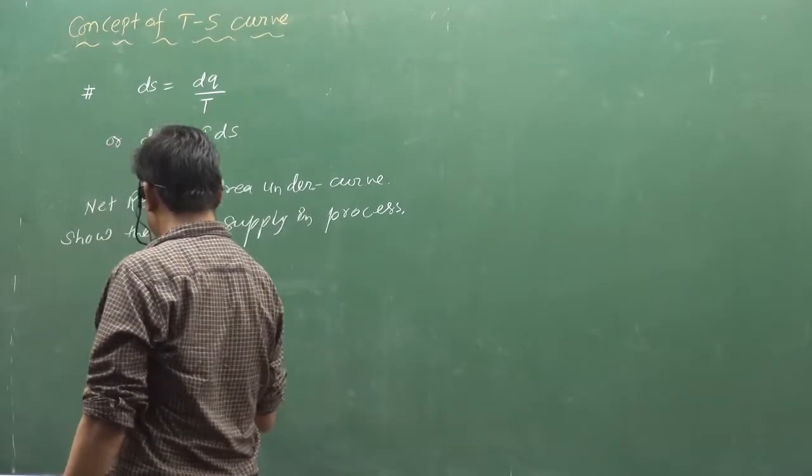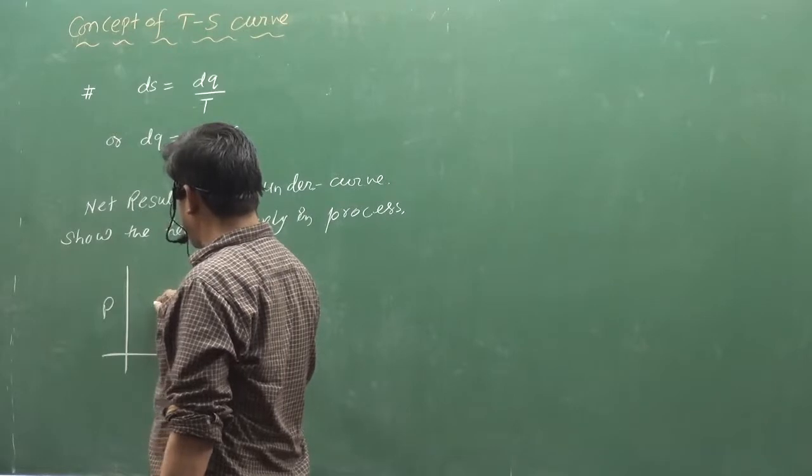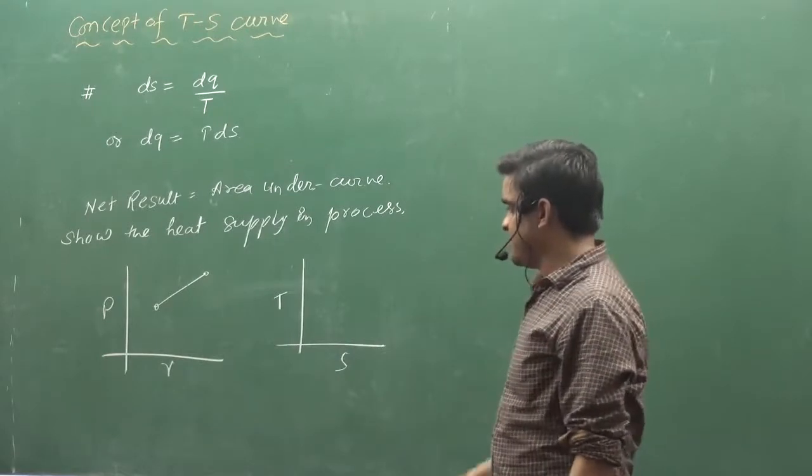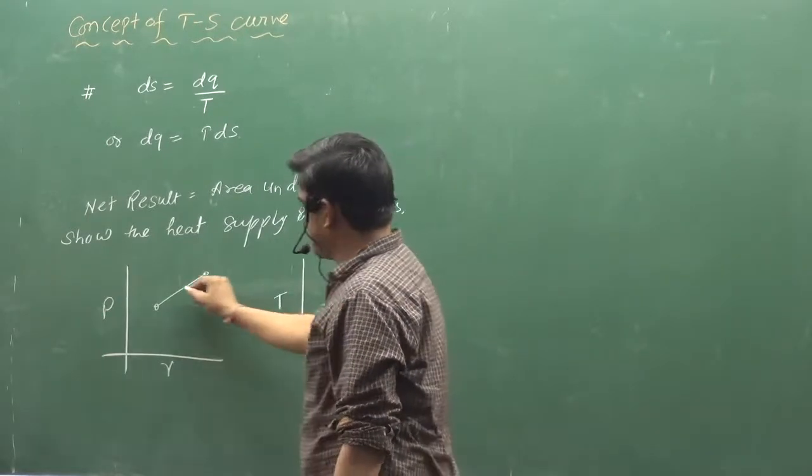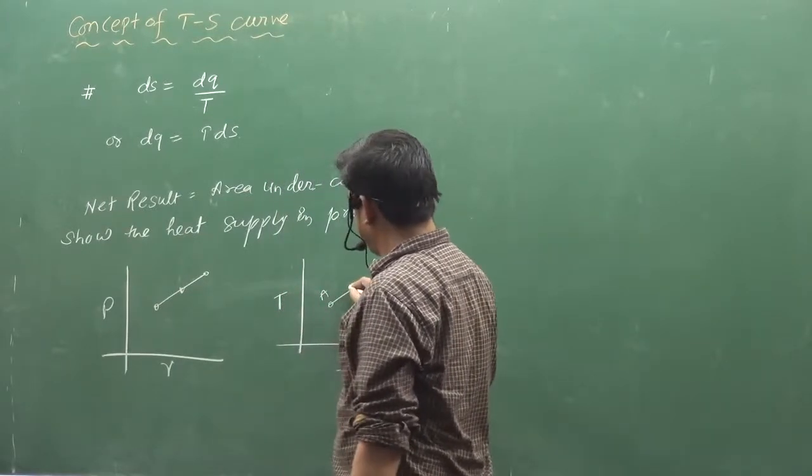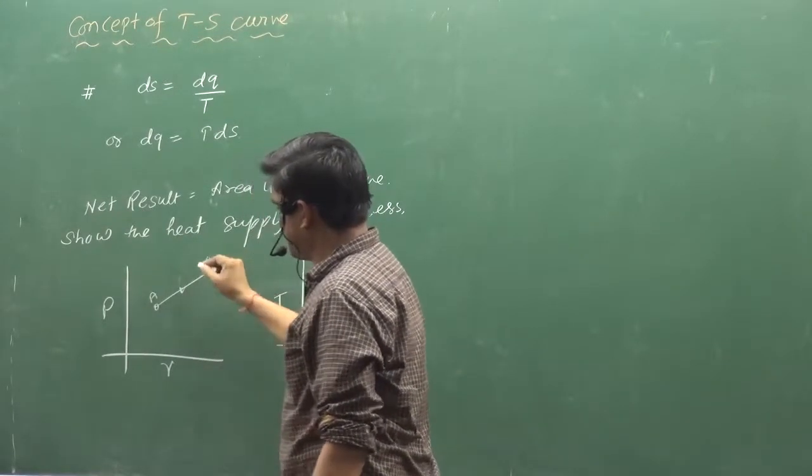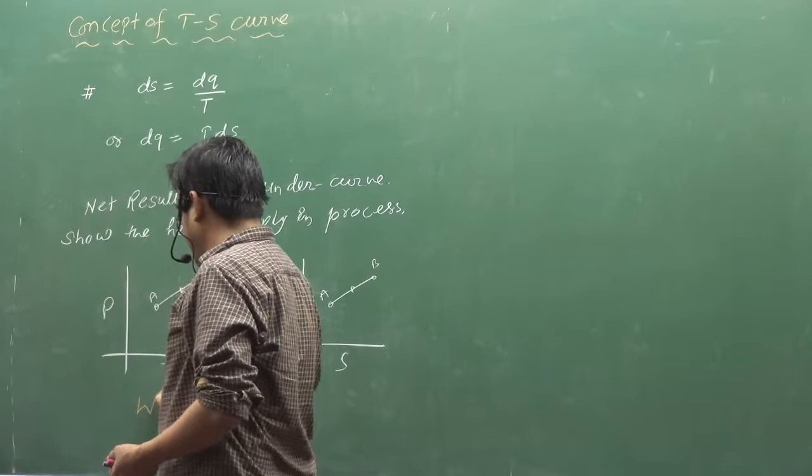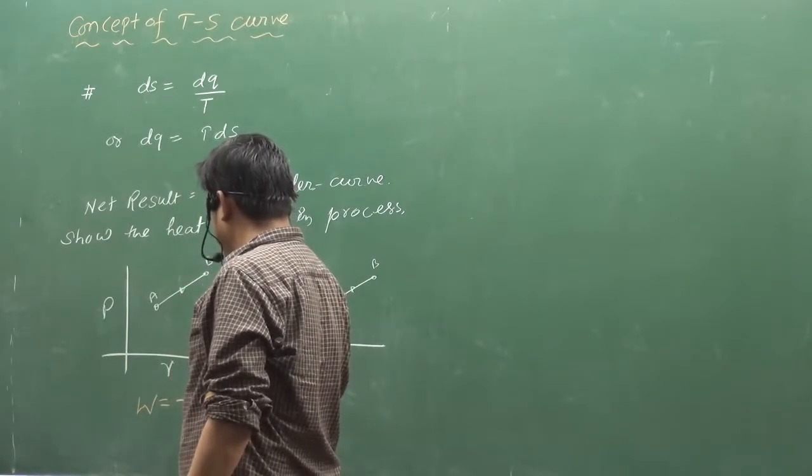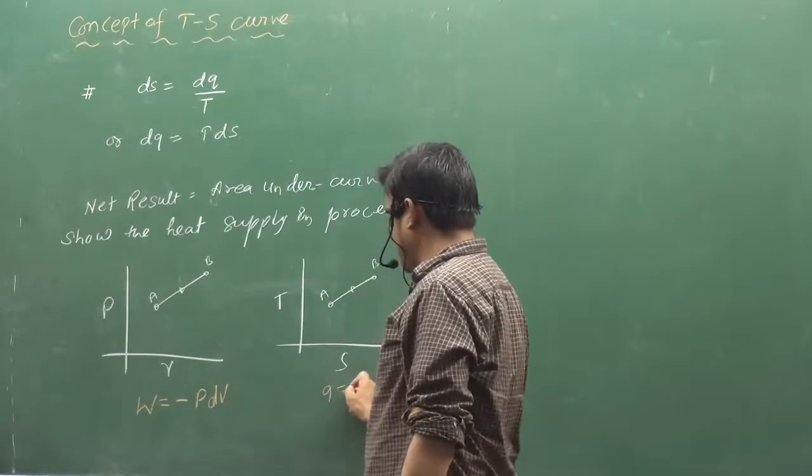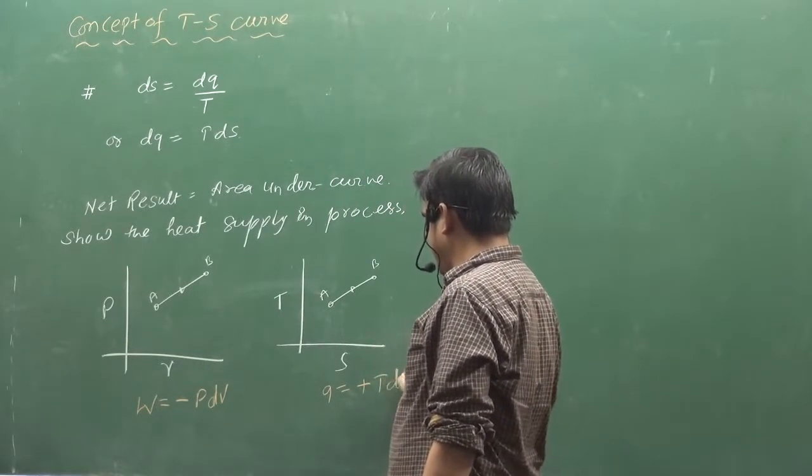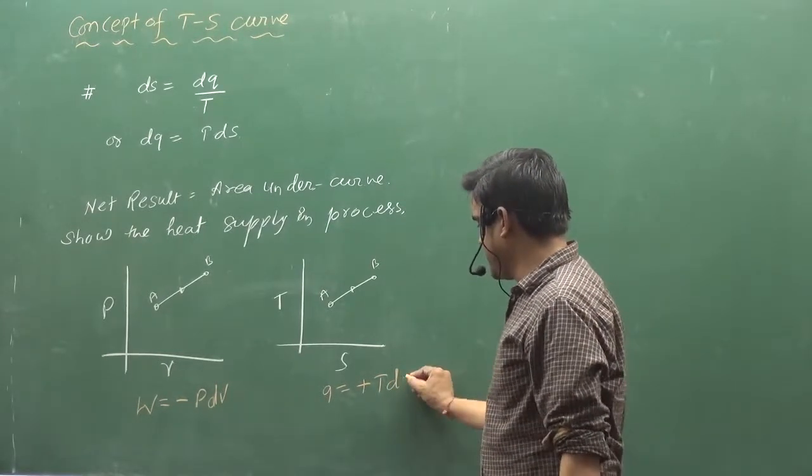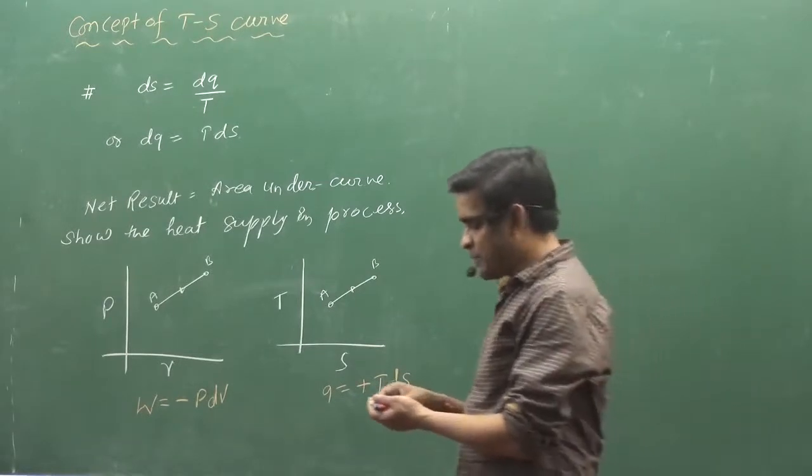Today you have some PV. When you have PV curve, TS curve, you will also have this. This A, this B. What is this? Here, work done, which is minus PDV. Here, you have heat, which is plus TDS. Clear concept? We can write TDS. So you have this area under the curve.